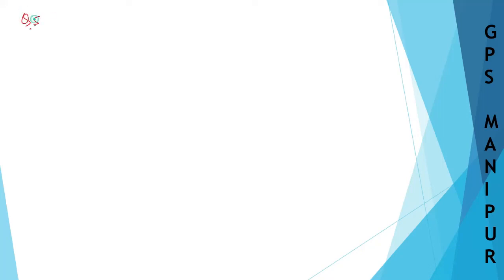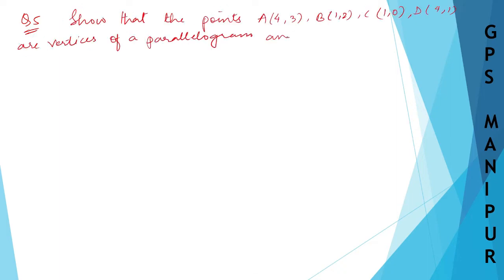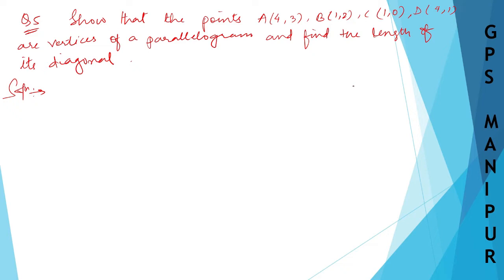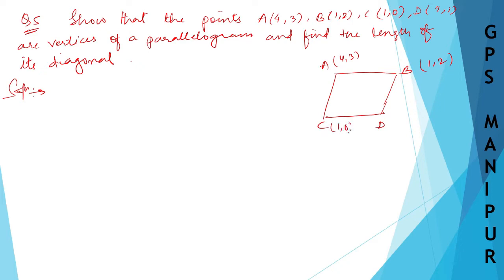Now we are doing exercise 3.2, question number 5. We need to show that the points A, B, C, D are vertices of a parallelogram and find the length of each diagonal. There is a diagram where A is (4,3), B is (1,2), C is (1,0), and D is (4,1).